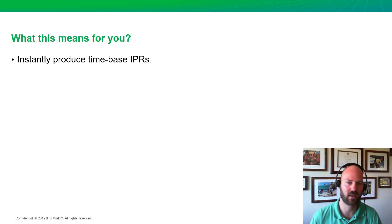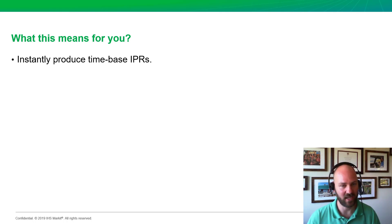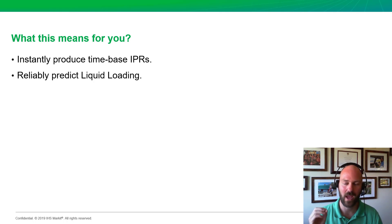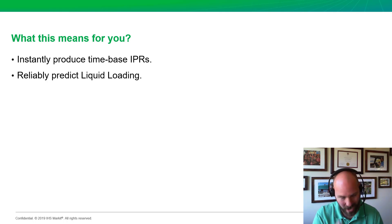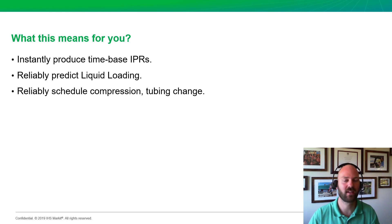So what does everything I've shown you really mean to you? Time-based IPRs matter when you're in transient flow — they matter in boundary-dominated flow too, but they're especially important because productivity is changing in transient flow. I showed you how you can instantly produce them from your RTA model, predict when the well will liquid load, and evaluate compression, coil tubing, or changing from casing to tubing — all by combining RTA and Optimize.